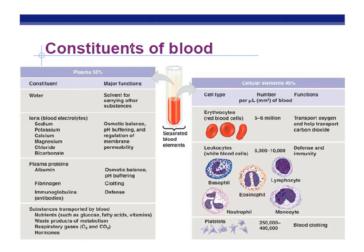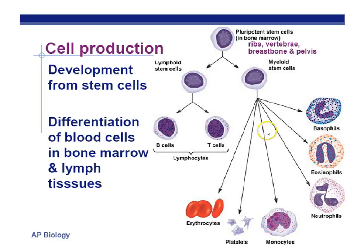For plasma and cell components, the key details to know are the cellular components: red blood cells — about five to six million per microliter — five different types of white blood cells, and platelets involved in blood clotting. All red and white blood cells come from stem cells, and you should know that all blood cells come from stem cells in your bone marrow. Stem cells can become any kind of cell. T cells and B cells specialize in different places, but we won't get into those details yet.